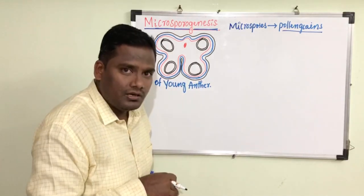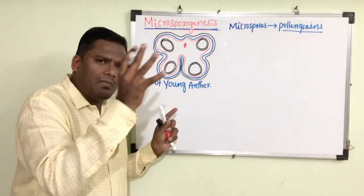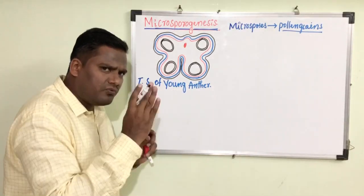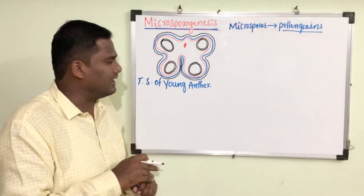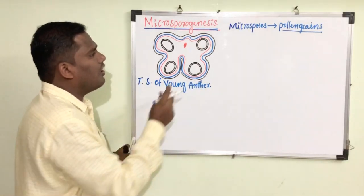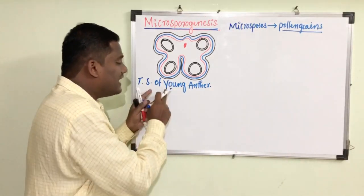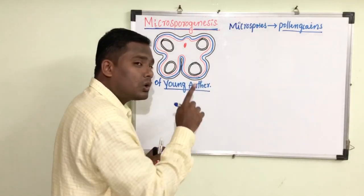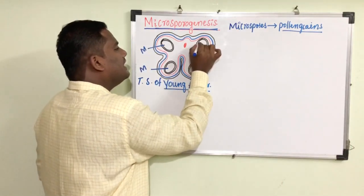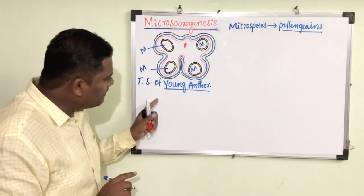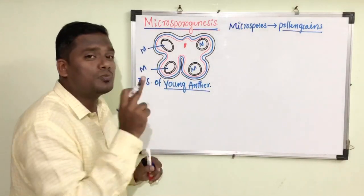These microspores are produced inside the anther. In the previous class we talked about the transverse section of the young anther. The anther is covered with four anthecial walls: epidermis, endothecium, middle layer, and the innermost tapetum layer. The tapetum layer consists of sac-like structures called microsporangia. In a young bilobed dithecous anther, there are four microsporangia.